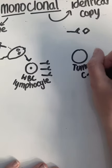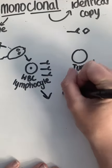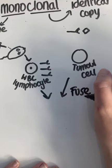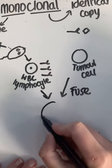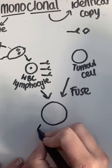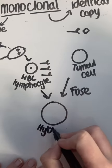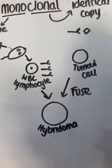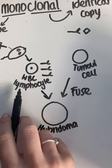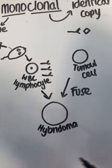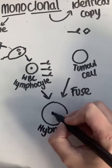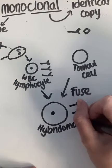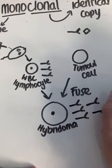We fuse the white blood cell with the tumor cell, and the result is a cell called a hybridoma. Like the word 'hybrid,' it's a mix of the two — a mix of the lymphocyte and the tumor cell.